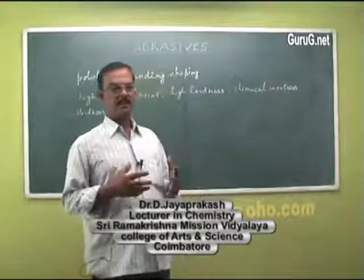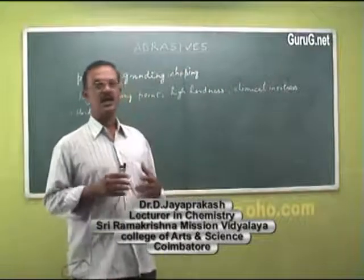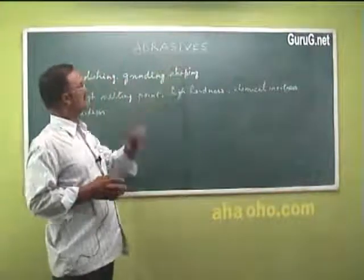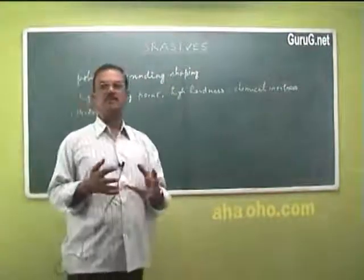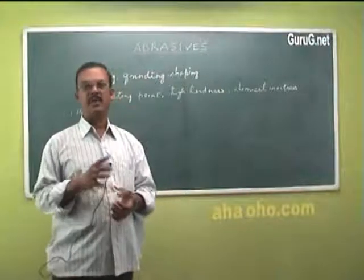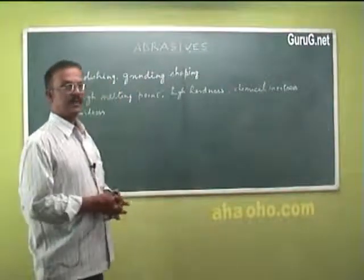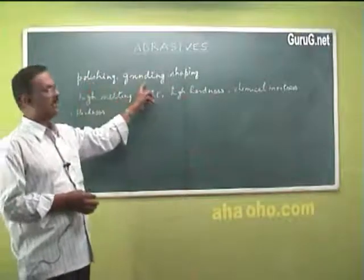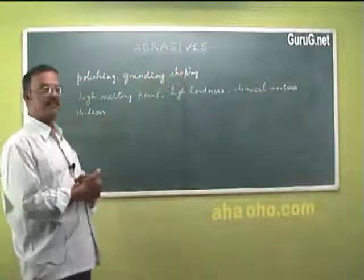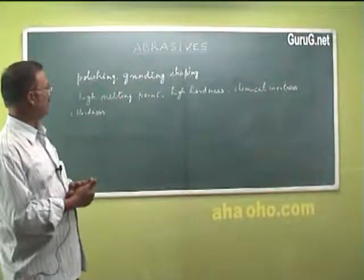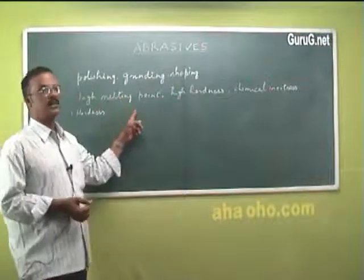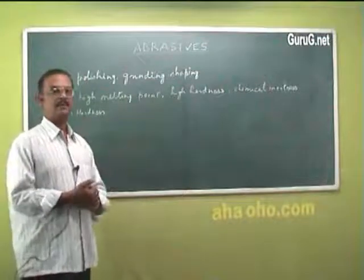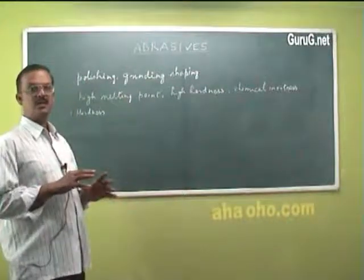There are certain materials which are hard in nature and they are called abrasives. These materials are used for polishing, grinding and shaping materials. They are very hard in nature, characterized by high melting point, high hardness, and they are chemically very inert — they do not undergo any change easily.